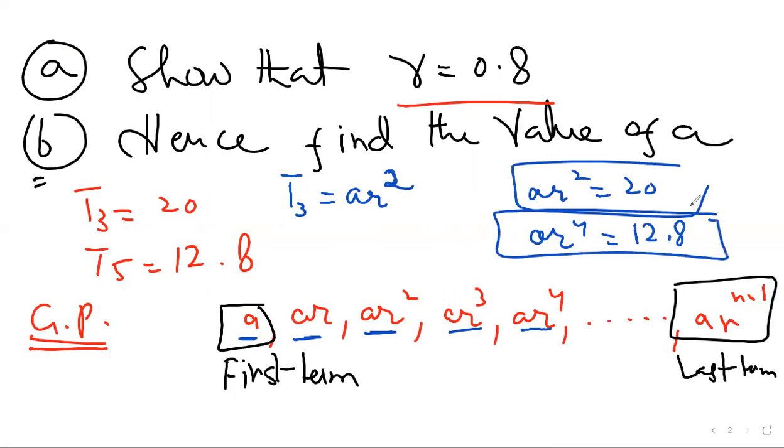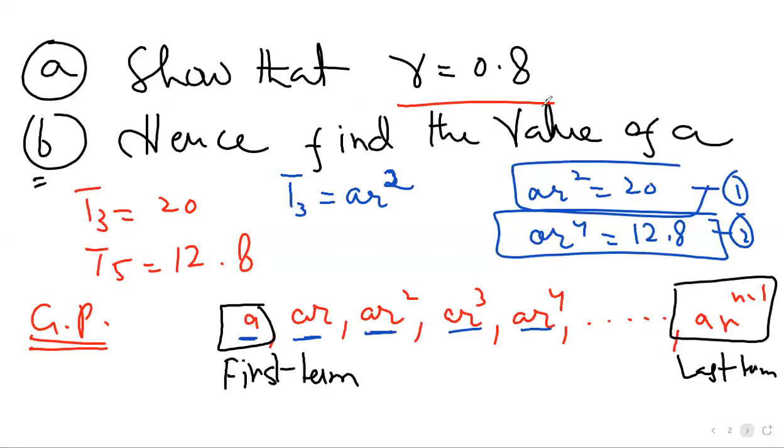Always keep in mind when the power of R is greater, we should divide two by one. AR to the 4th divided by AR square equals 12.8 divided by 20.